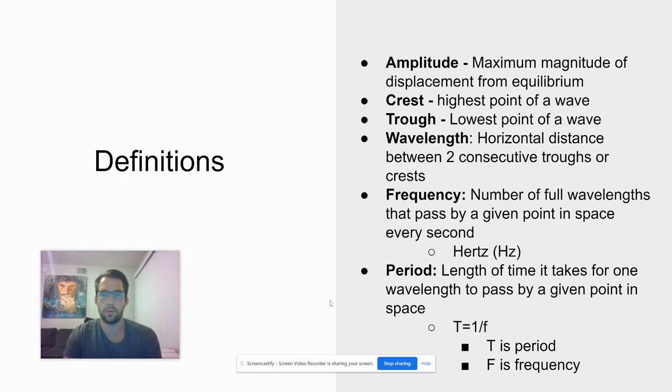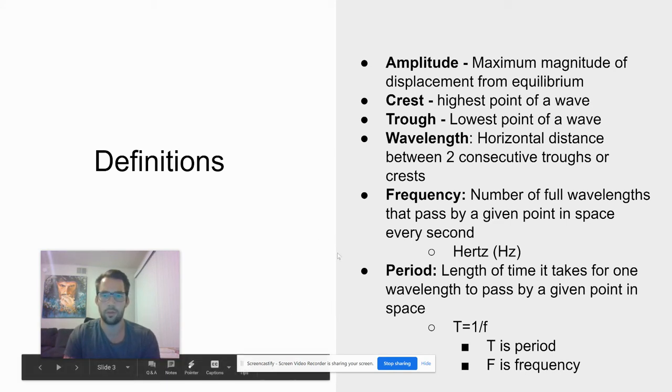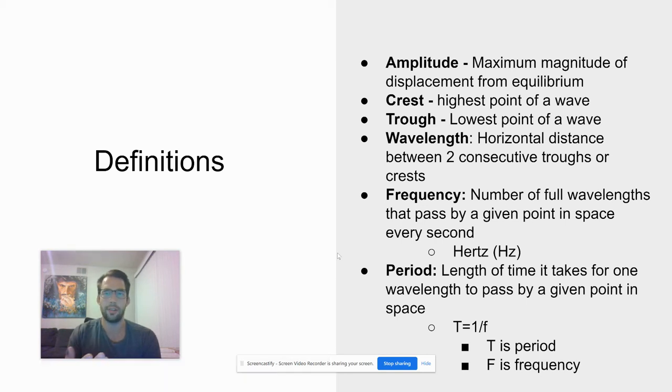Frequency is probably more familiar to you. Frequency is going to be measured in hertz, and it's the number of wavelengths that pass by a given point every second. Most waves that we're going to be talking about move very, very fast, so it's better to measure how many wavelengths pass by in one second rather than how long it takes one wave to go by.